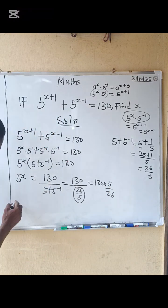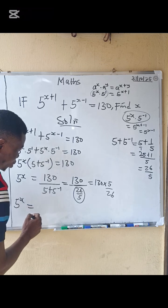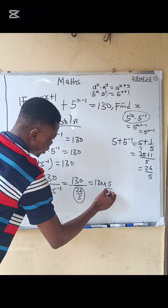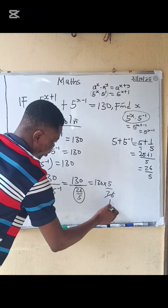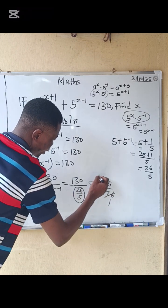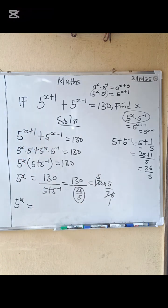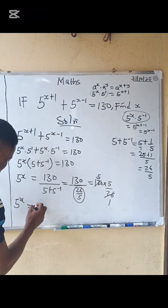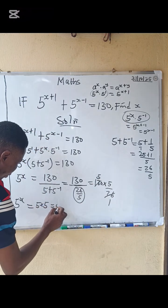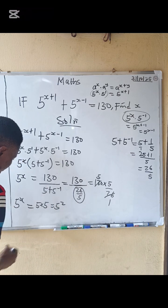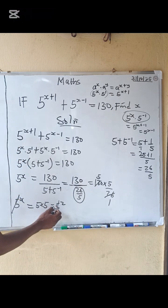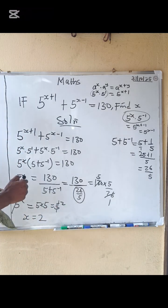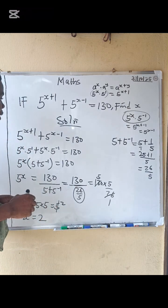So five to the x equals 900 over 26. Simplifying: 900 over 26 equals 25, which is five squared. Since the bases are the same, we equate the exponents, giving us x equals 2. That is the answer.